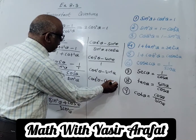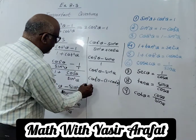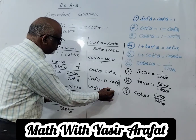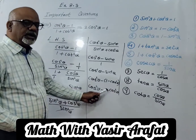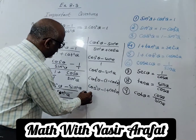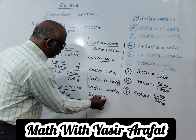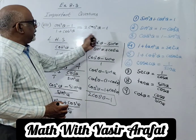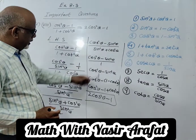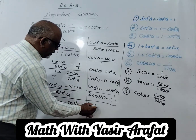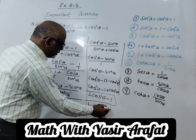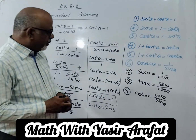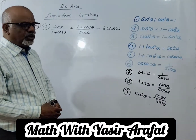Now on the right hand side we have 2cos²θ − 1, so we substitute sin²θ = 1 − cos²θ. Opening the bracket with the negative sign: cos²θ − 1 + cos²θ, which gives 2cos²θ − 1, which is the right hand side. So left hand side equals the right hand side.